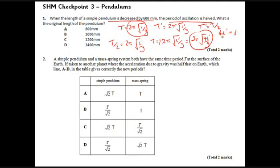So the length must be a quarter of what it originally was: l-dash = l/4. We need the length to be reduced by 600 millimeters and be a quarter of what it started at. If it started at 800mm and went to 200mm, that's a quarter as long — so the answer is A.